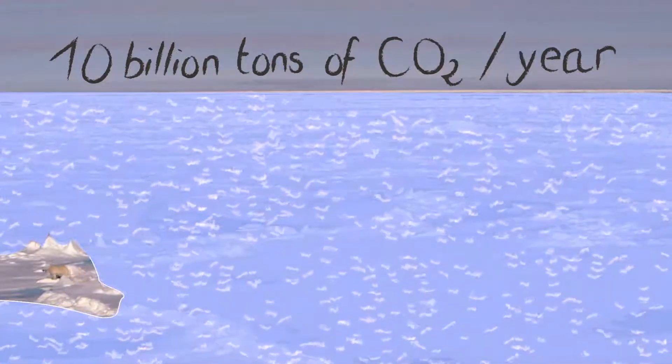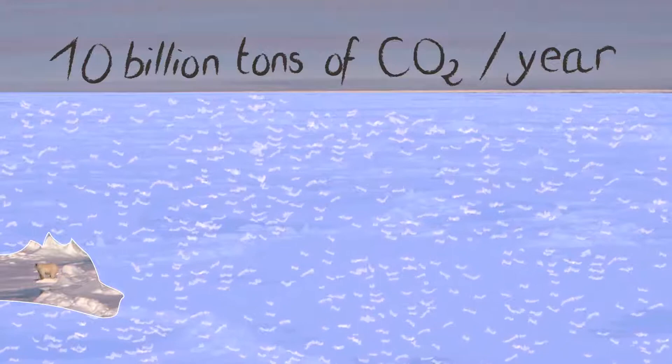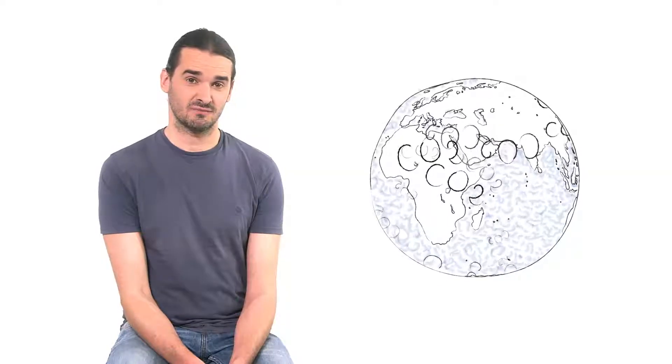If this trend continues, we are going to lose the summer Arctic sea ice by mid-century. So to avoid the loss of Arctic sea ice, it's very simple. We should just be smart and stop putting more CO2 in the atmosphere.